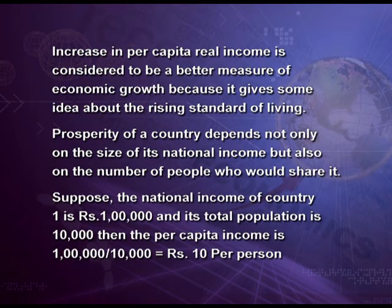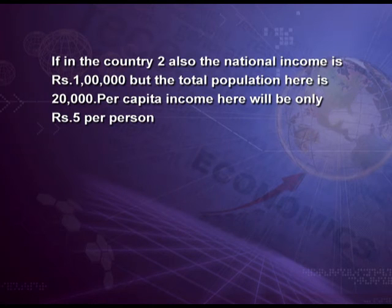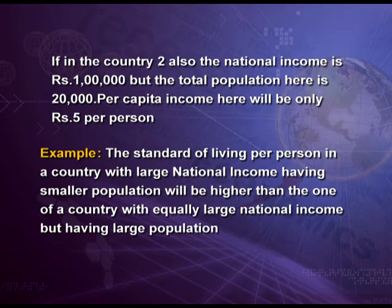Let us take an example. Suppose the national income of country 1 is rupees 1 lakh and its total population is 10,000. Then per capita income will be 1 lakh divided by 10,000, which equals rupees 10 per person. If in country 2 the national income is also rupees 1 lakh but the population is 20,000, then per capita income will be only rupees 5 per person. This shows that the standard of living per person in a country with large national income and smaller population will be higher than in one with equally large national income but a larger population.